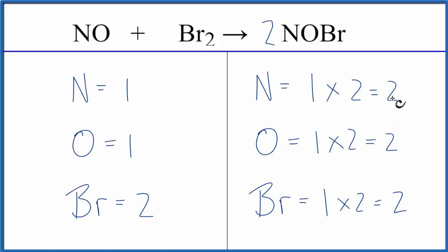That's not too much of a problem, though. We can see that we have 1 Nitrogen here, 2 here, 1 Oxygen, 2 Oxygen. So we just need to double those, and we can do that by putting a coefficient of 2 in front of the NO.